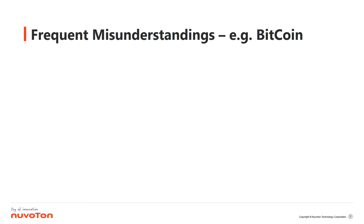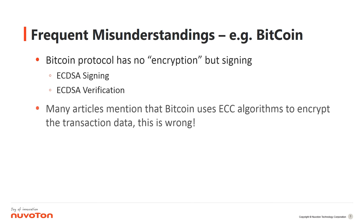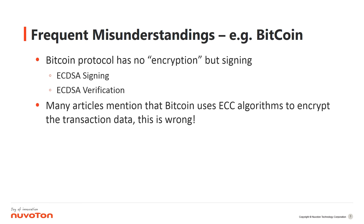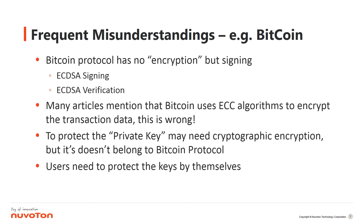Let's address some frequent misunderstandings using the Bitcoin example. Firstly, the Bitcoin protocol has no encryption but signing, like ECDSA signing and ECDSA verification. Second, many articles mention that Bitcoin uses ECC algorithms to encrypt the transaction data — this is wrong. Protecting the private key may require cryptographic encryption, but it doesn't belong to the Bitcoin protocol. So users need to protect the private keys by themselves.